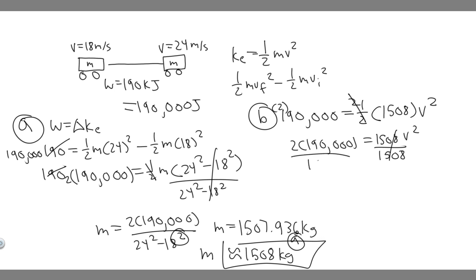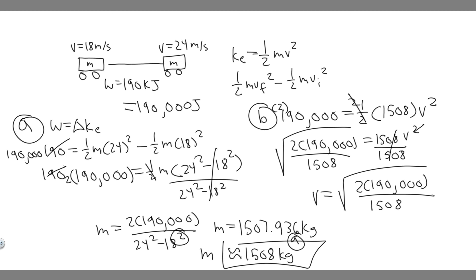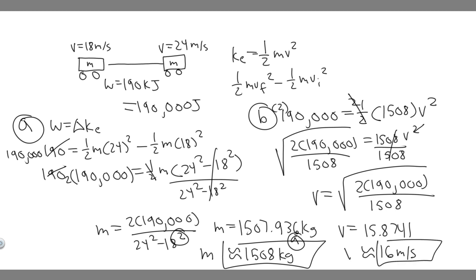Dividing both sides by 1,508 and then taking the square root of both sides to get rid of the squared, we get v equals the square root of (2 times 190,000 divided by 1,508). Plugging this in, the velocity equals approximately 15.8741, which rounds to 16 meters per second. So the speed is about 16 meters per second — that's your answer to Part B. And your answer to Part A was 1,508 kilograms.